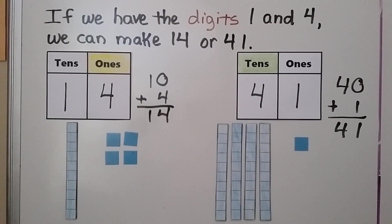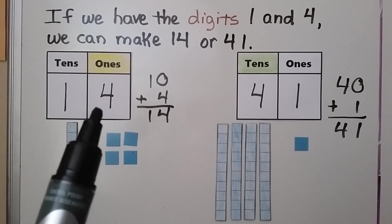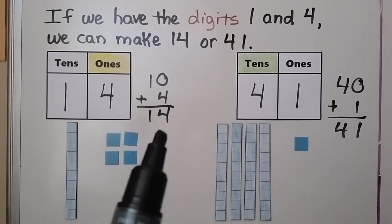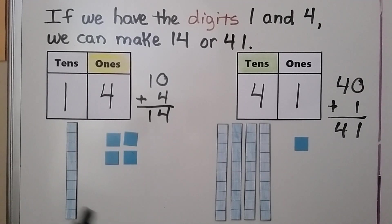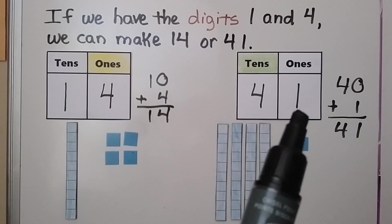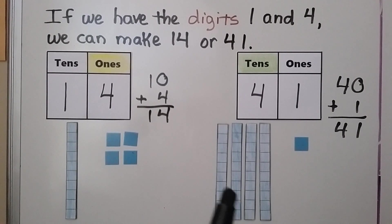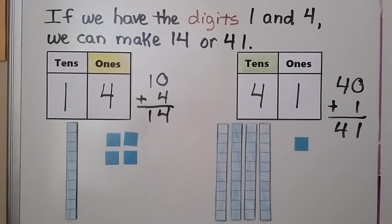If we have the digits 1 and 4, we can make 14 or 41. We could put the 1 in the tens place and the 4 in the ones place — we'll have 14, a 10 and four ones. If we put the 4 in the tens place and the 1 in the ones place, we'll have 41 — four tens and one one.